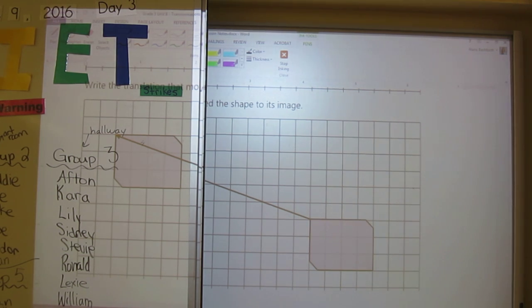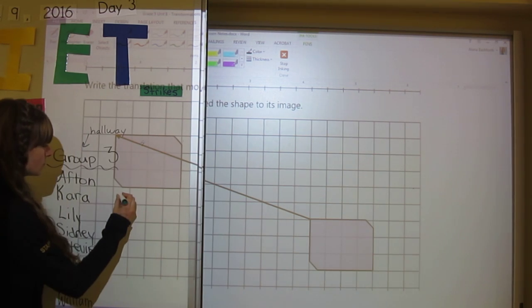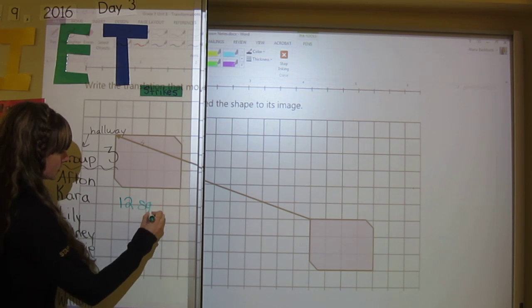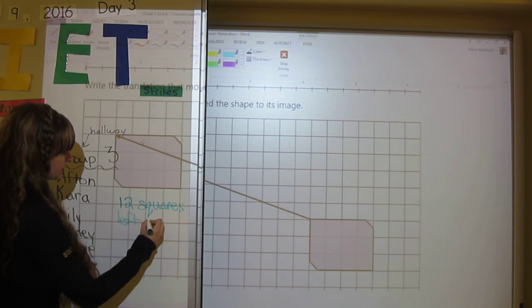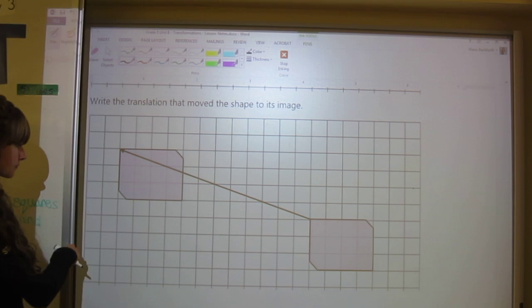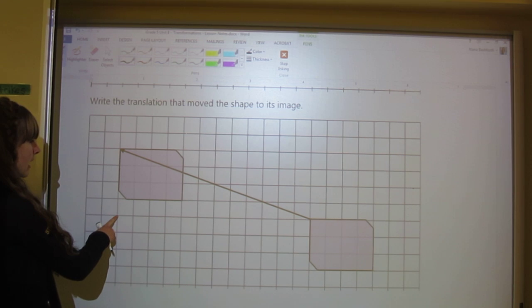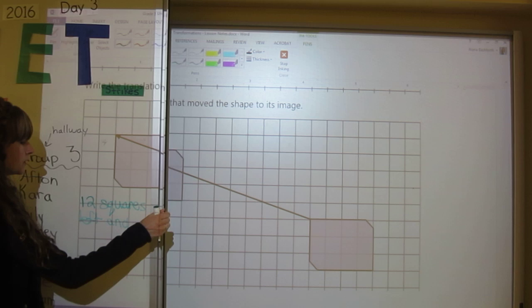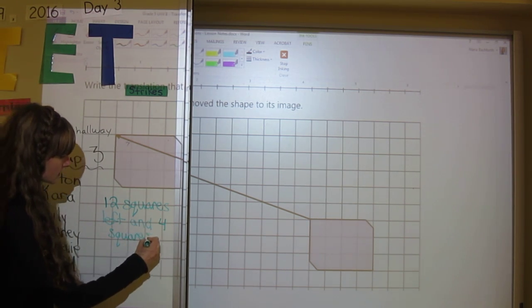Twelve squares and that is to the left. So twelve squares left, and we ended here, and then one, two, three, four. So four squares up.